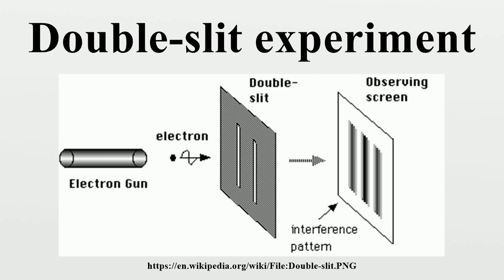This phenomenon has been shown to occur with photons, electrons, atoms, and even some molecules, including buckyballs. Experiments with electrons add confirmatory evidence to the view that electrons, protons, neutrons, and even larger entities ordinarily called particles nevertheless have their own wave nature and even their own specific frequencies. The probability of detection is the square of the amplitude of the wave and can be calculated with classical waves. The particles do not arrive at the screen in a predictable order, so knowing where all the previous particles appeared tells nothing about where a future particle will be detected. If there is a cancellation of waves at some point, the particle will appear somewhere else. Ever since the origination of quantum mechanics, some theorists have searched for ways to incorporate additional determinants or hidden variables that, were they to become known, would account for the location of each individual impact with the target.